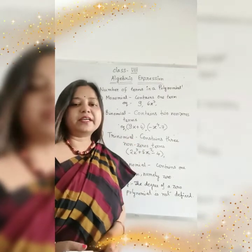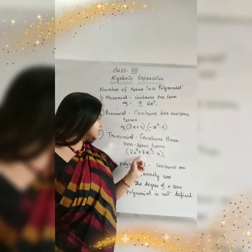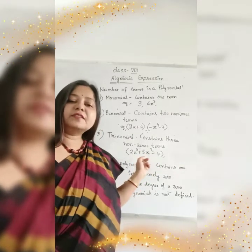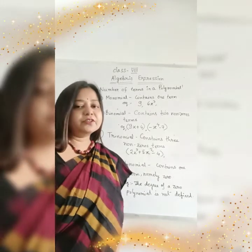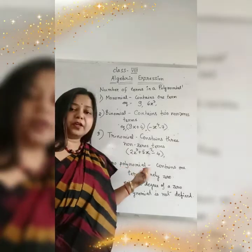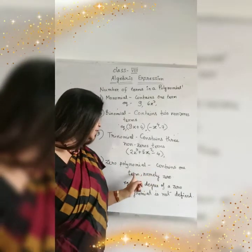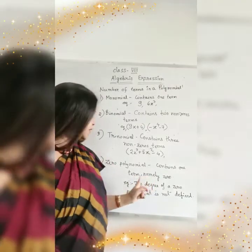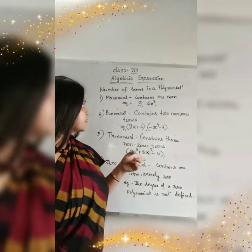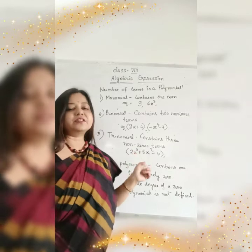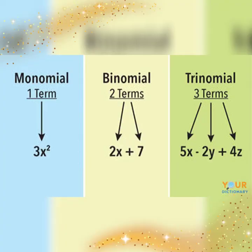Next is trinomial. When an Algebraic Expression contains 3 terms, it is called trinomial. As you can see here: 2x cube plus 5x square minus 4. In this expression there are 3 terms, so this is called trinomial. And the next one is zero polynomial. Zero polynomial means it contains 1 term and that term is 0. The degree of zero polynomial is not defined.